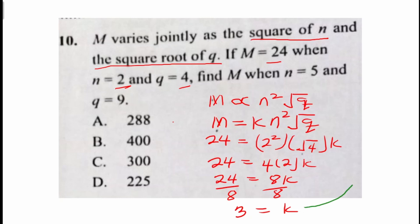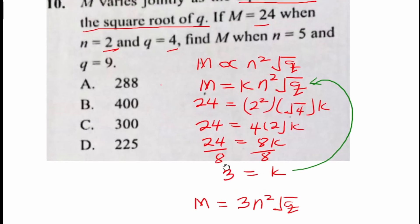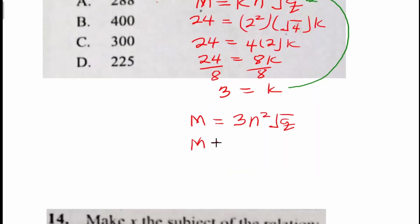Then now we are going to plug the value of k into this relation here. So let's do that. Our equation now becomes M equals 3n squared multiplying square root of q. And now the question asks us to find the value of M when n equals 5 and q equals 9. So we're going to substitute 5 here and then 9 here to see what we get.